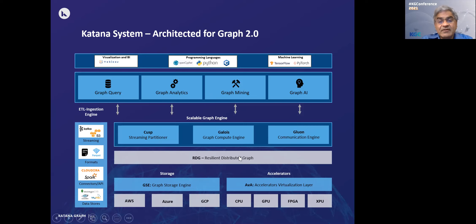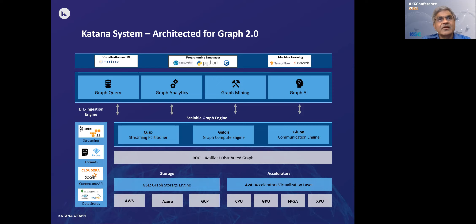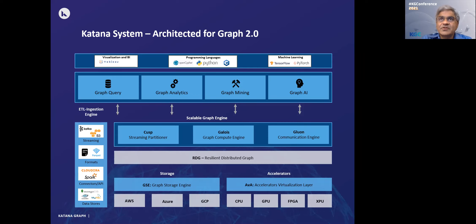To compute within a single machine, we have a graph compute engine called Galois. It is a very sophisticated runtime system and collection of data structures that allow you to write very efficient graph processing algorithms at a high level of abstraction. Unlike computational science, which computes over regular grids and allows static load balancing across cores, graphs are very irregular and work is generated dynamically — making static load balancing very difficult. Instead, we use dynamic load balancing via a very efficient technique called work stealing, which operates under the covers without the application programmer needing to worry about it.